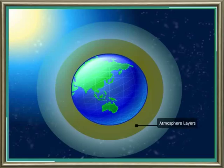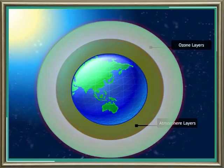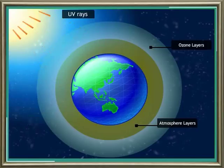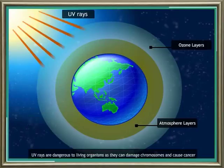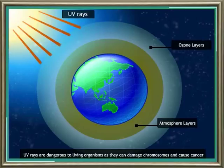In the upper layers of the atmosphere, oxygen is in the form of ozone. The ozone molecule has three atoms of oxygen. Ozone forms a blanket or cover over the atmosphere, preventing UV or ultraviolet rays from reaching the earth by absorbing them. UV rays are dangerous to living organisms as they can damage chromosomes and cause cancer.